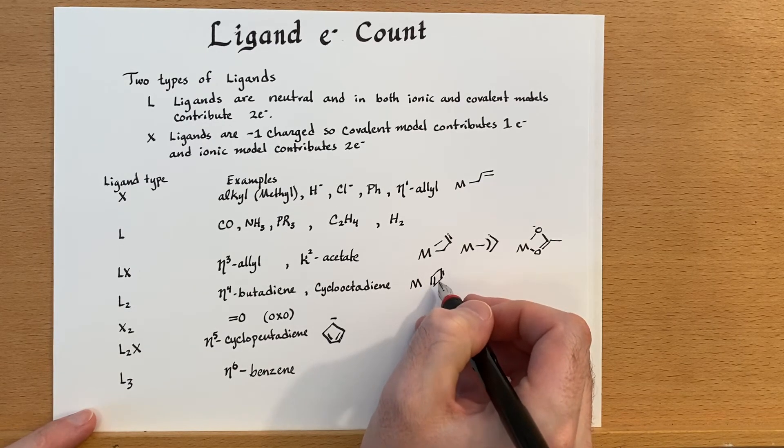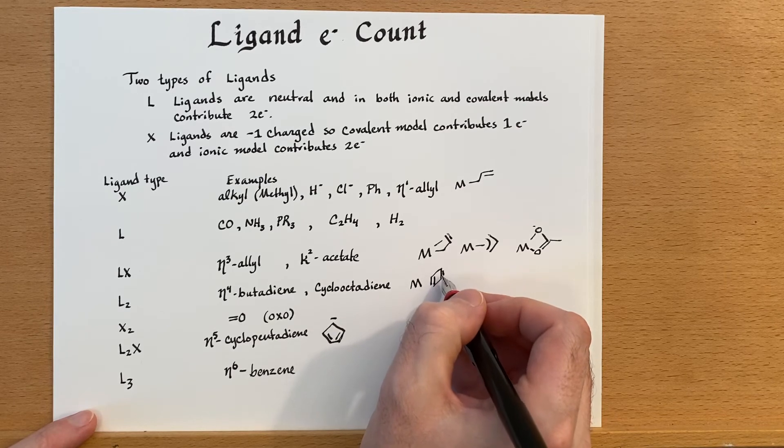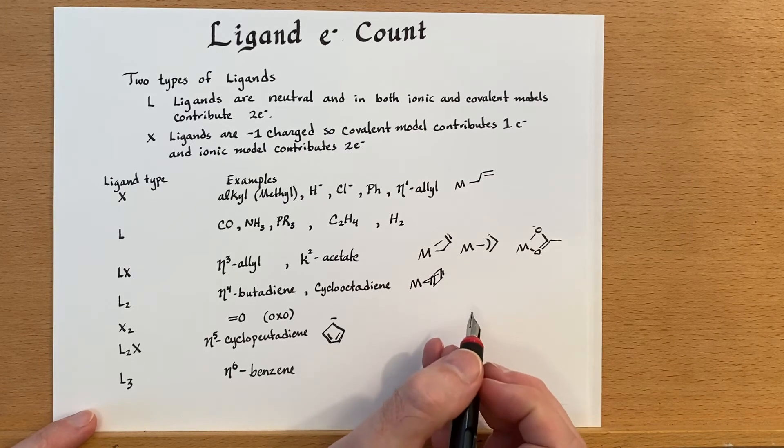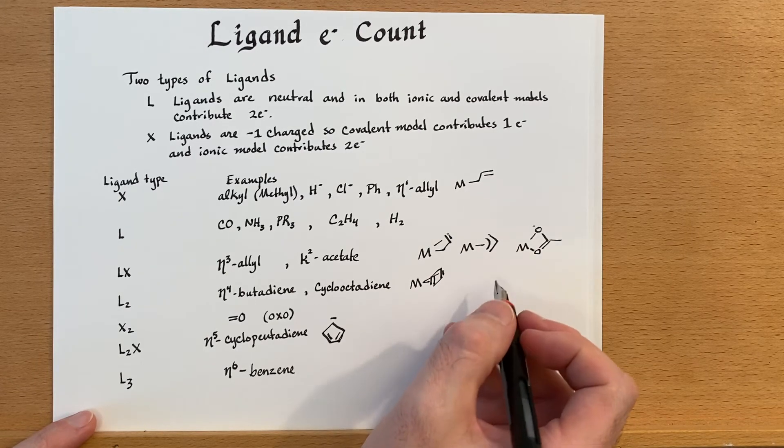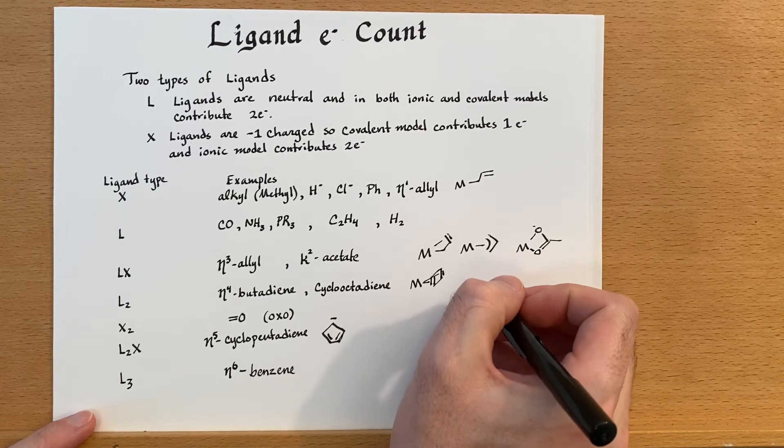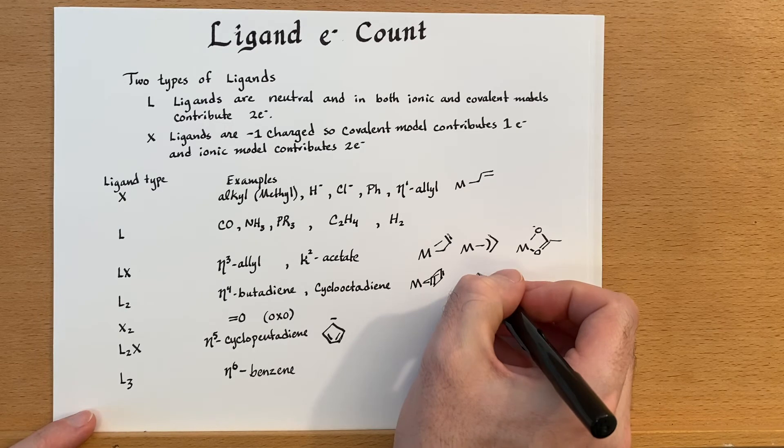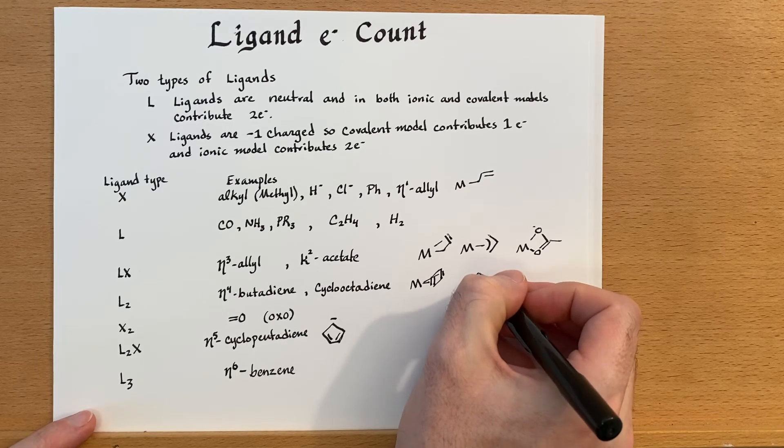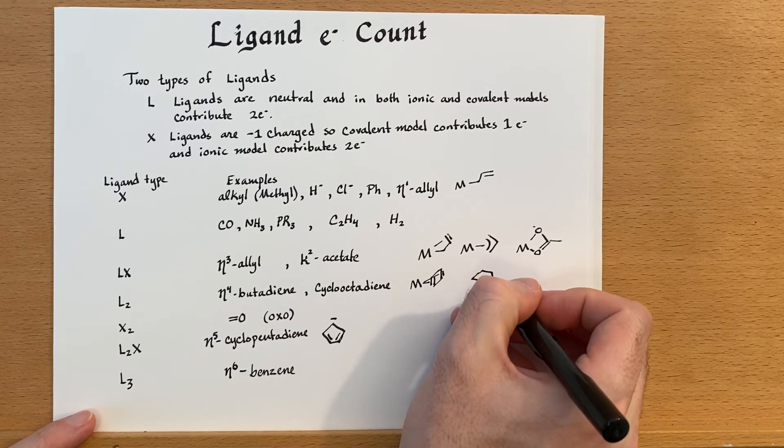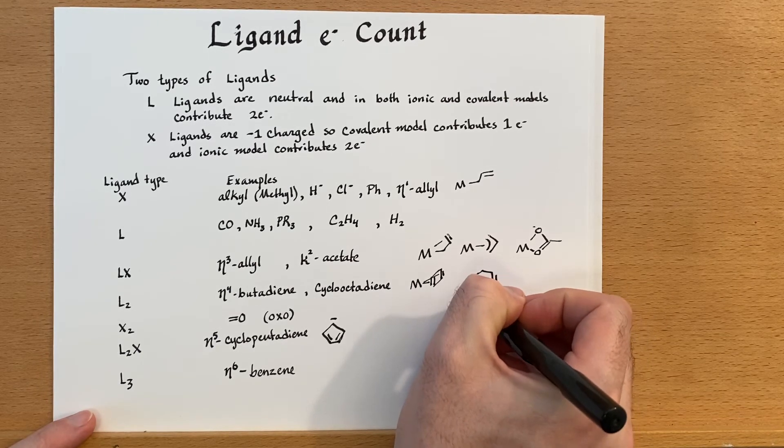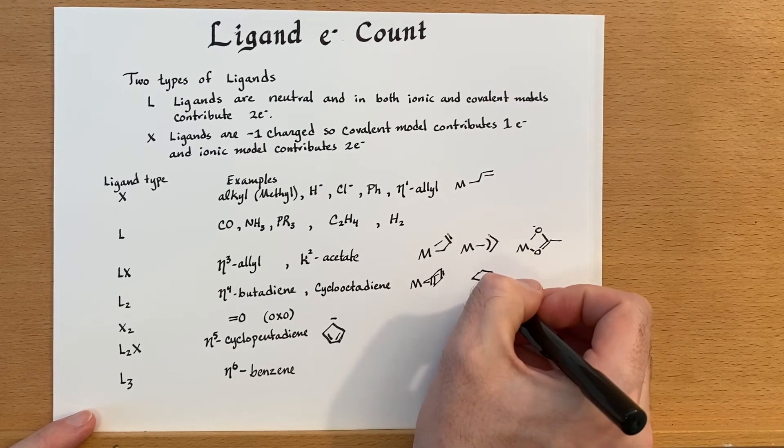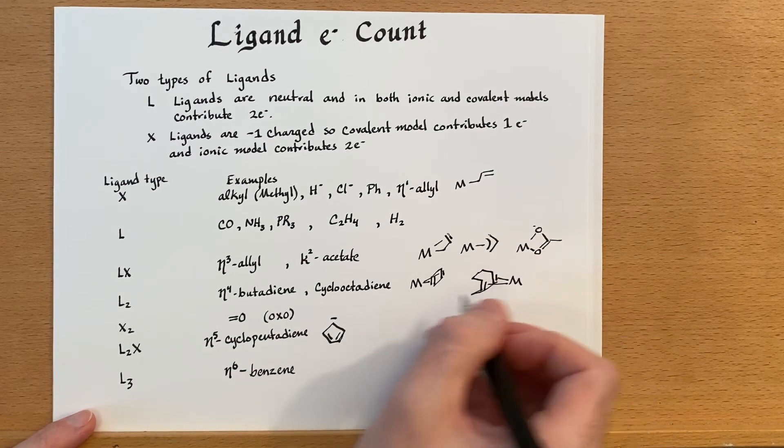So we have a cyclooctadiene, butadiene. So there's two double bonds in there and the metal will bond to each one of those double bonds, kind of like that. And then you have cyclooctadiene, which is a very similar molecule, just without the ring strain. So we'll draw that one really quick here. So it's eight-membered ring and you have the metal there.